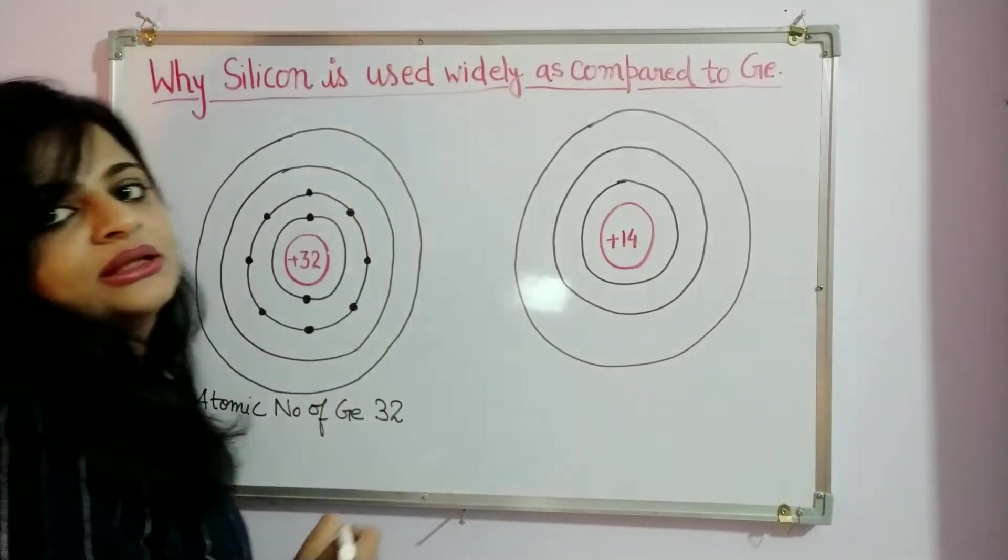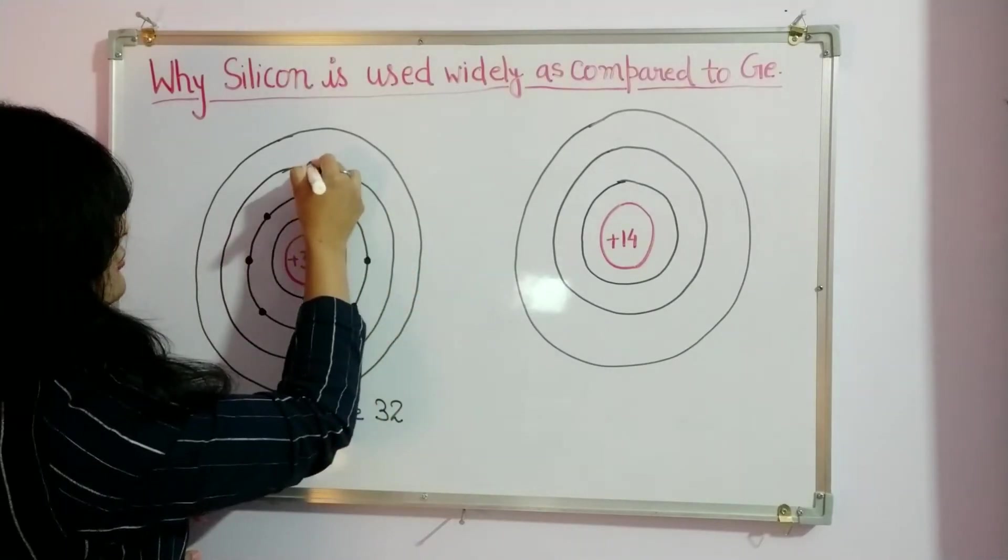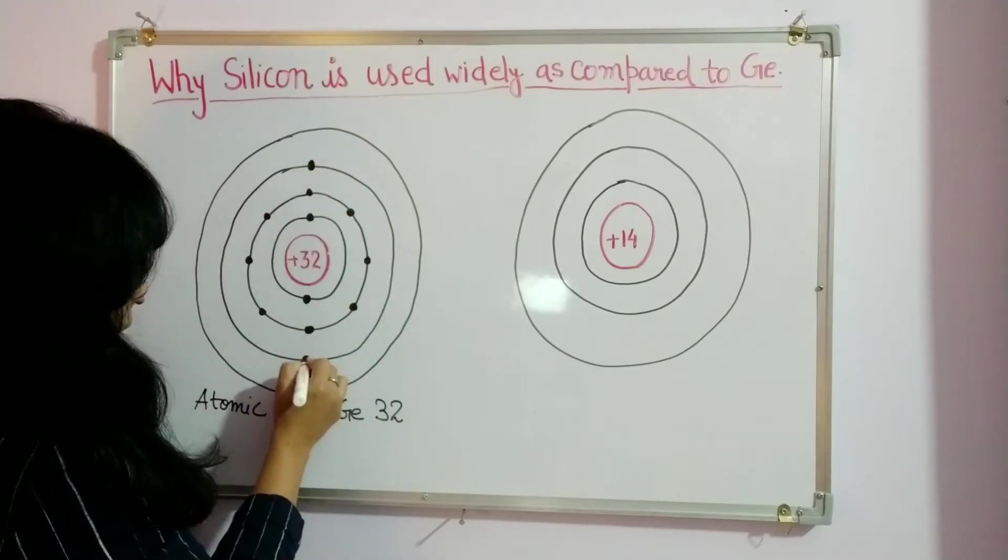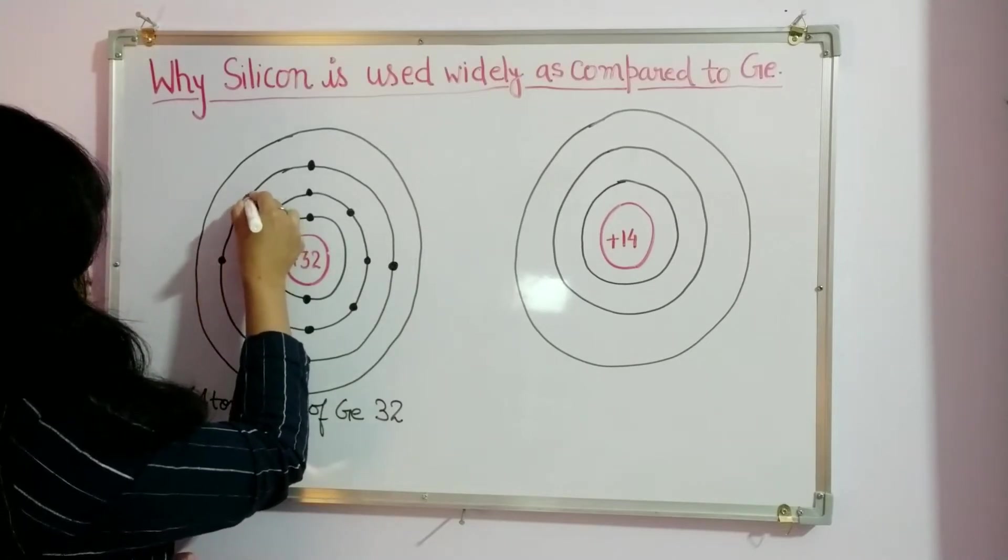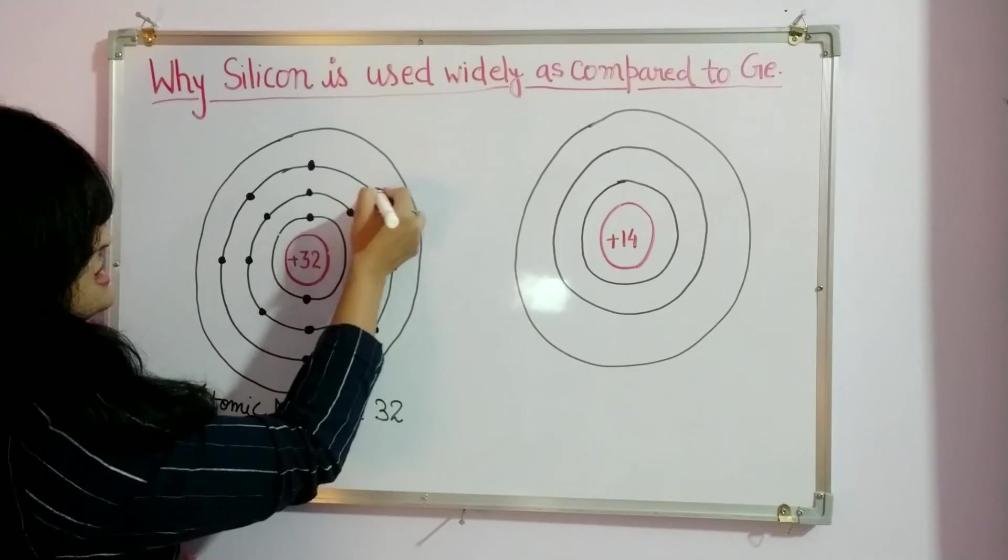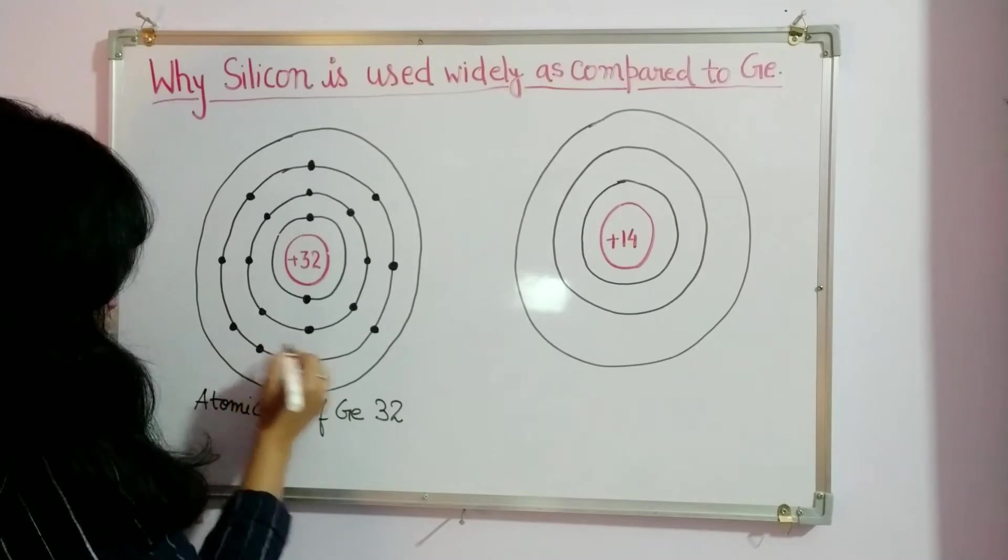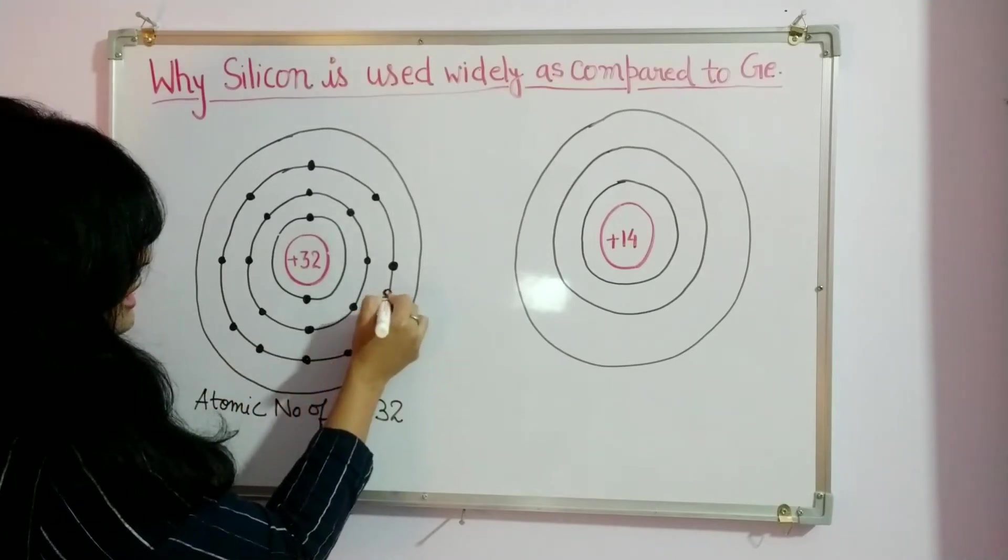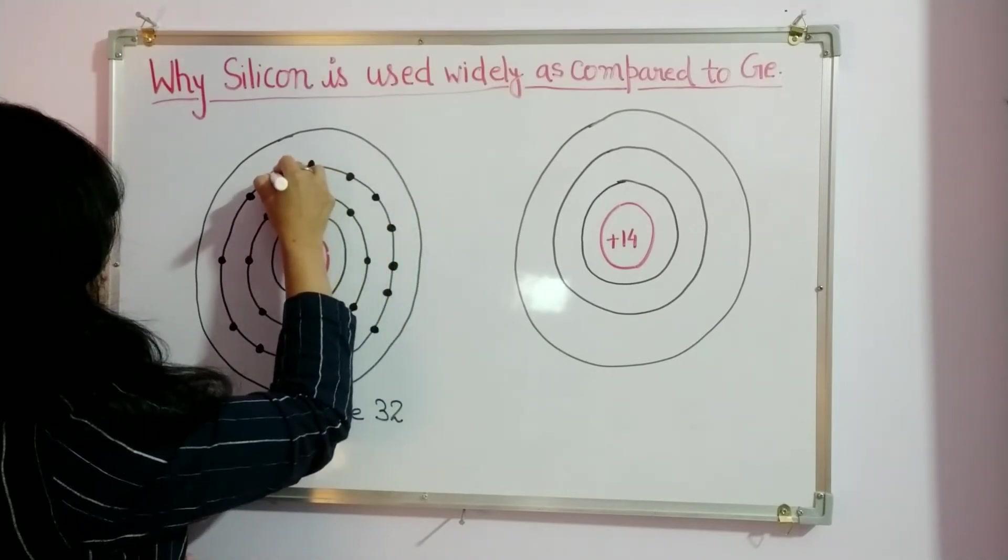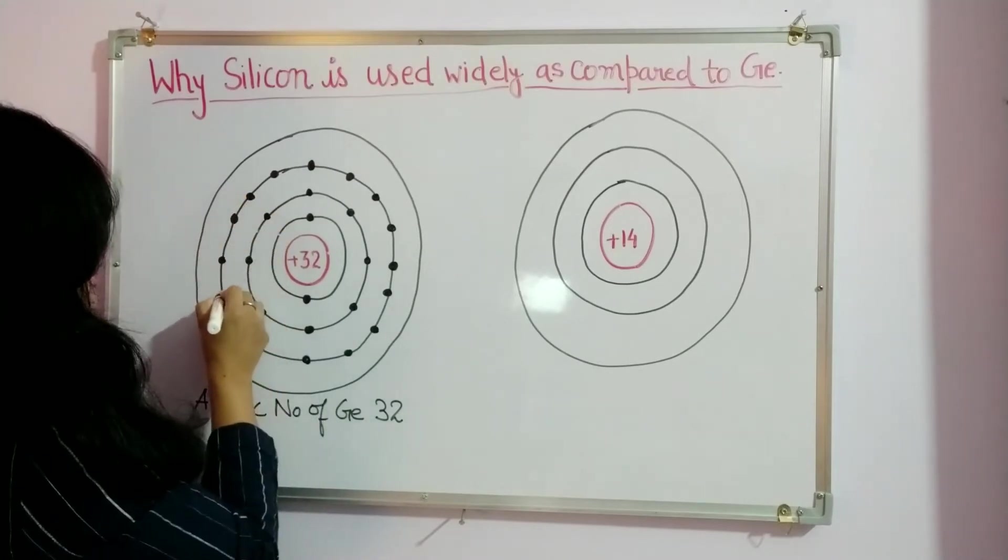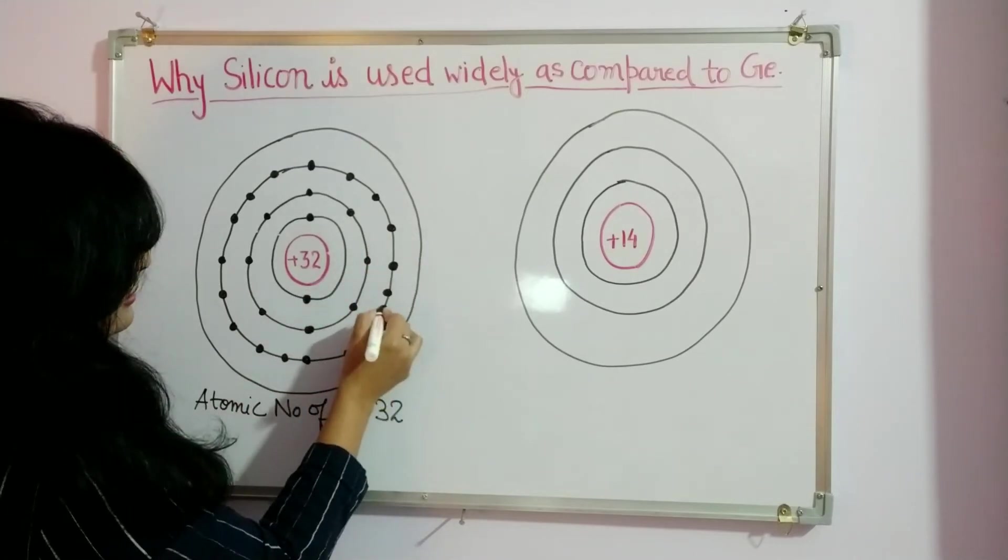Now in the third shell we will have 18 electrons, arranged as 1, 2, 3, 4, 5, 6, 7, 8, 9, 10, 11, 12, 13, 14, 15, 16, 17, and 18.